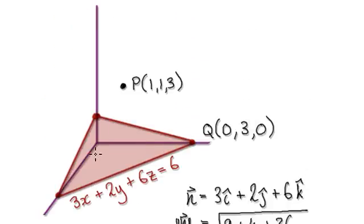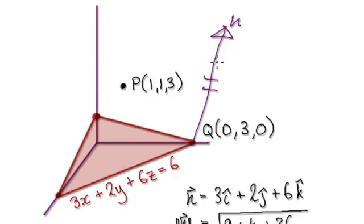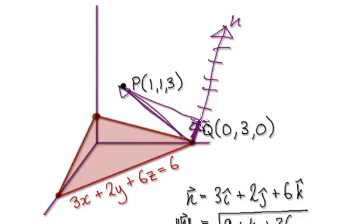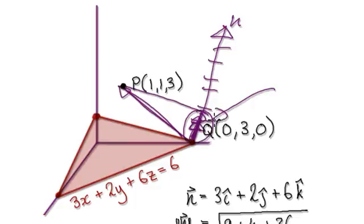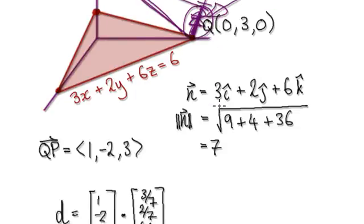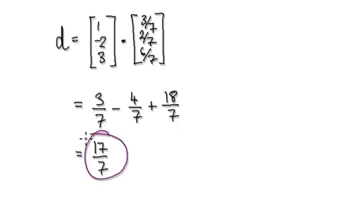So just a quick recap: work out the normal vector, and then once you've got your normal vector, work out its magnitude and then divide it by its magnitude — that gives you the unit vector. Then work out QP and then project this vector onto the unit normal. So project it onto here, and it will then give you the answer here.